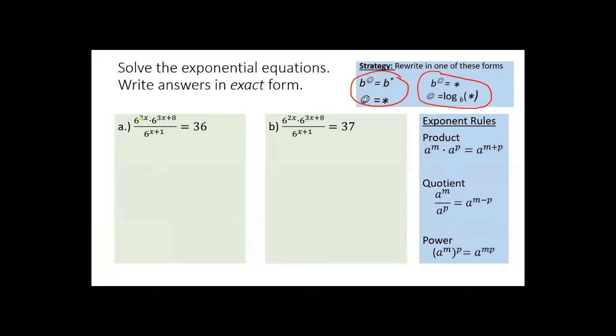When I look at example a, I see I have base 6 raised to a variety of exponents. I also have a product of expressions in my numerator and a quotient of expressions. So I can use the product and quotient exponent rules to help me simplify.